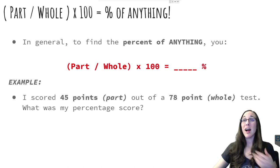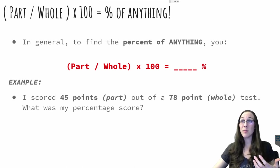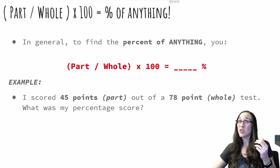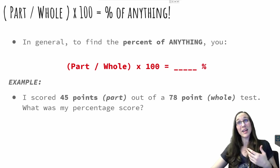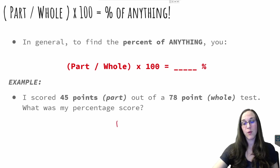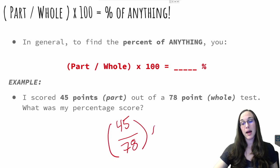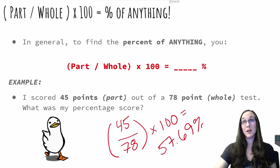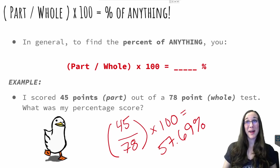So for example, if I scored 45 points, that would be the part, out of a 78 point test, that's the whole, what was my percentage score on said test? All I'd have to do is take 45, divide that by 78, take that answer, multiply it by 100 and that would give me my percent. Here I would have scored a 57.69 percent. Looks like I didn't pass that test.